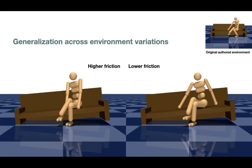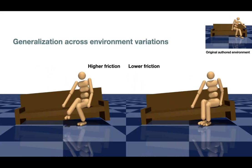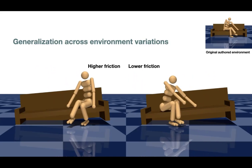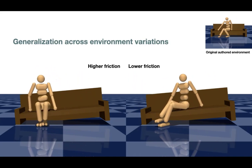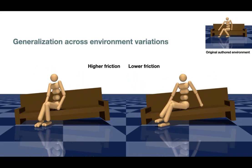Our method is also robust to changing the physical properties of the environment, such as the friction coefficient. Here we show two examples of shuffling motion generated on a slightly tilted bench, with a rough surface compared with a smooth surface.